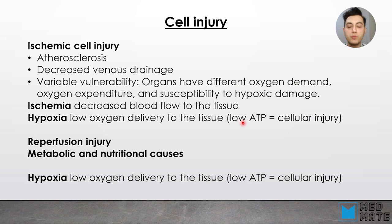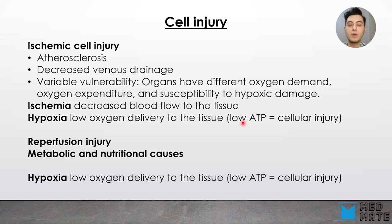Another term we have to get introduced to is cell injury. Cell injury happens due to different reasons. One of them is ischemia — when there is decreased blood flow to the tissue — which can be due to atherosclerosis or decreased venous drainage. Different tissues have different demands for nutrients and oxygen, so their response to ischemia is different. Another cause is hypoxia, which is low oxygen delivery to the tissue. We need oxygen for ATP production, so low oxygen leads to low ATP production and cellular injury. Also, reperfusion injury and some metabolic or nutritional causes can lead to cell injury.